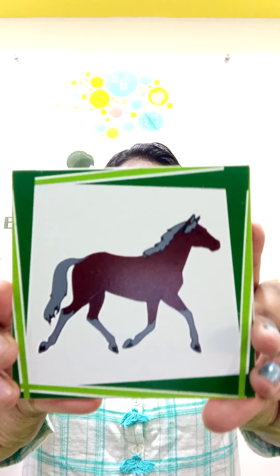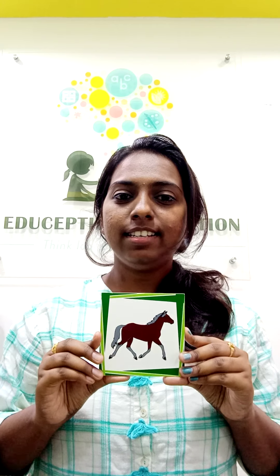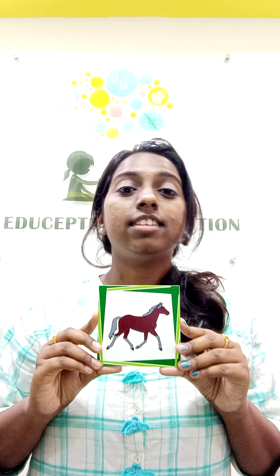The next animal is — what is this? It is a horse. In Kannada you call it kudure. We call it kudure.